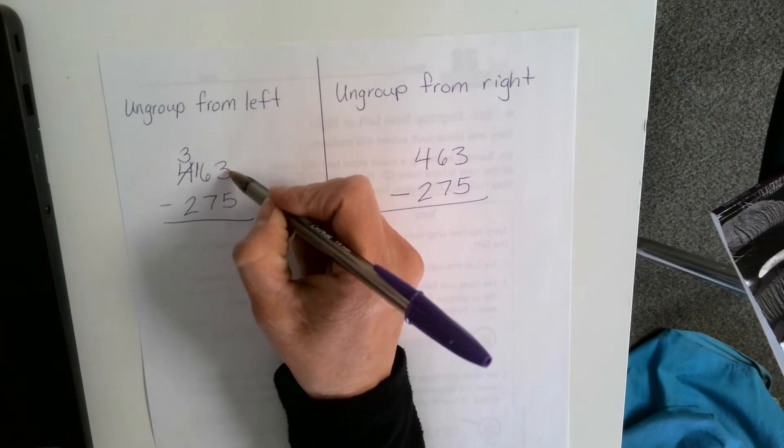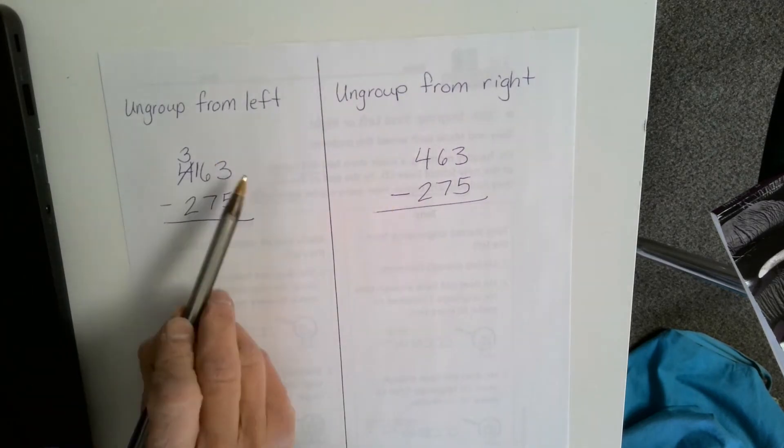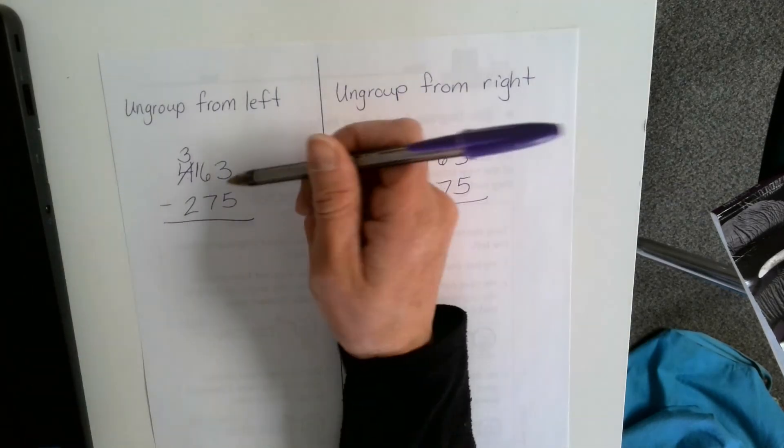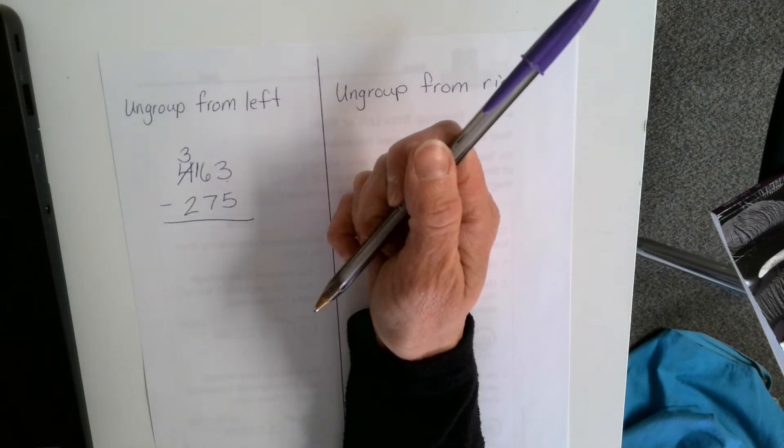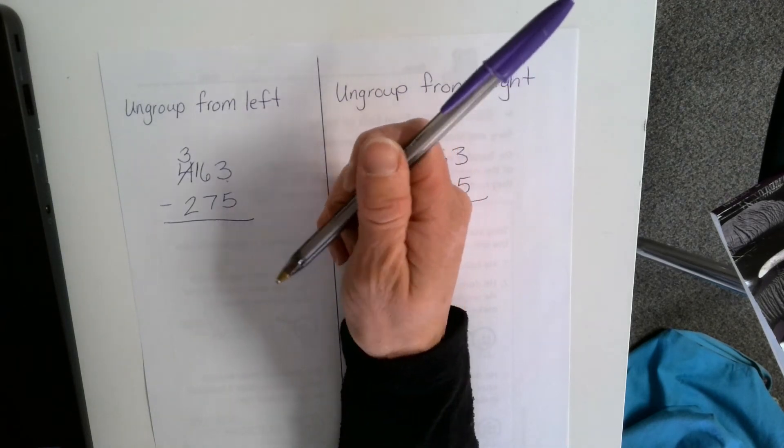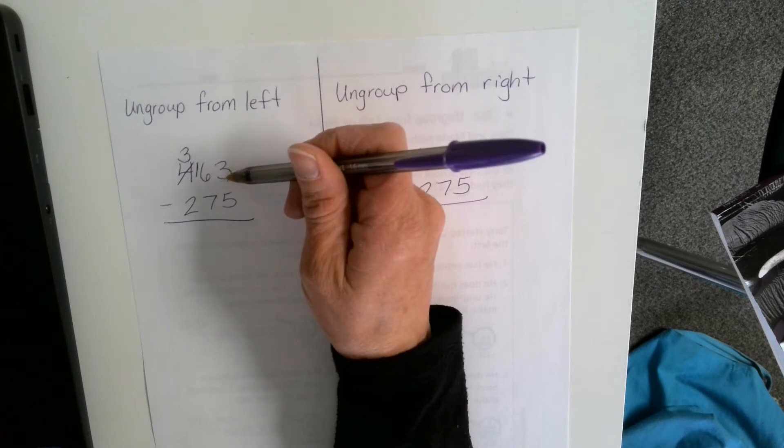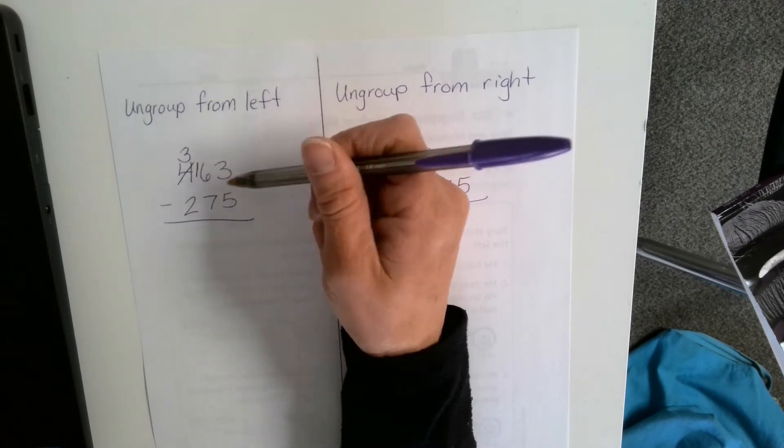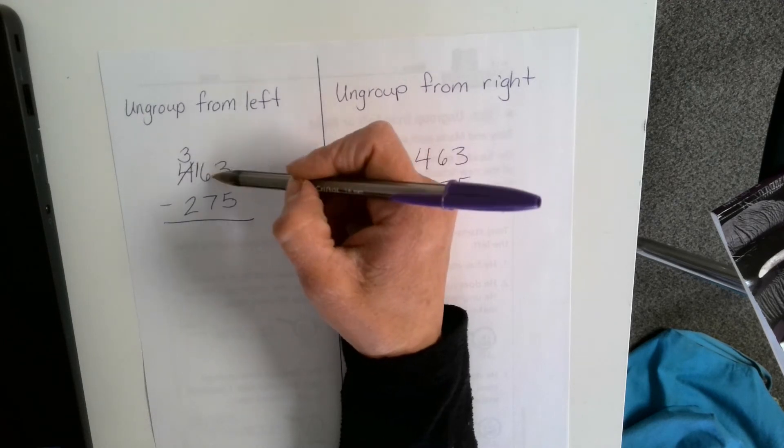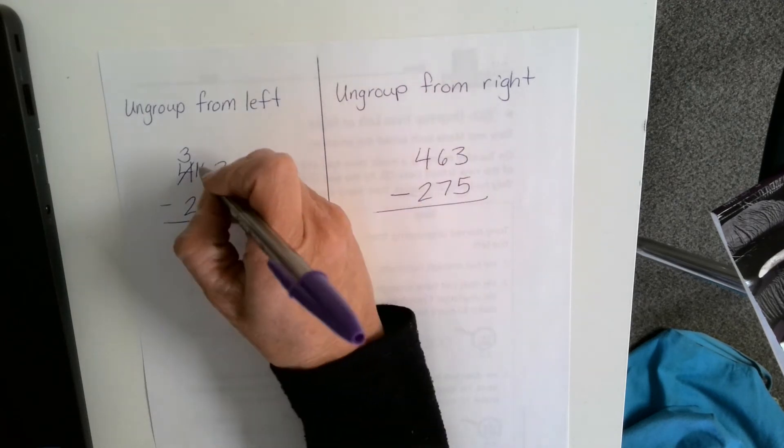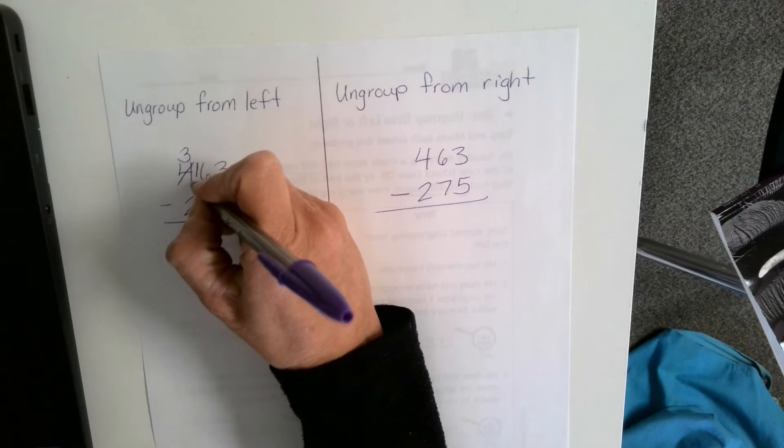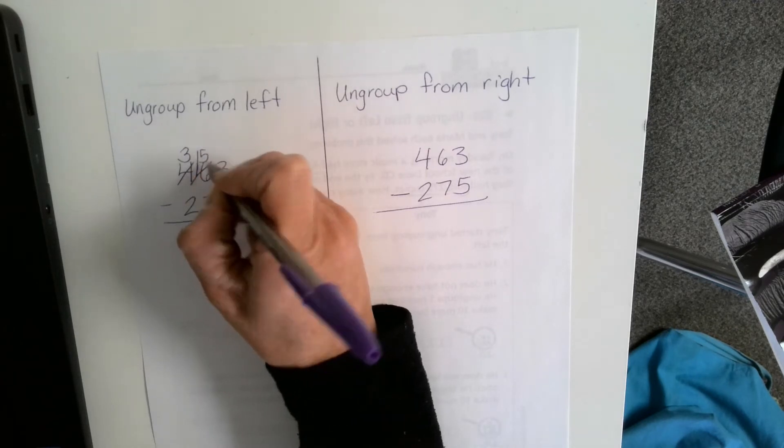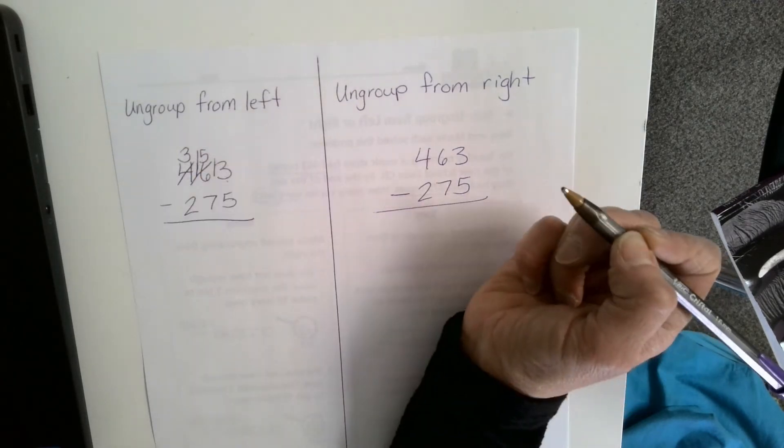Now I'm going to go to my ones. I'm just moving from the left to the right. 3 minus 5. Can I do that? Absolutely not. It's not enough. The number on top has to be greater than the number you're taking away from it. I have 16 here. I'm going to take away that 1 from that 16 and make this a 15 and make a new group.